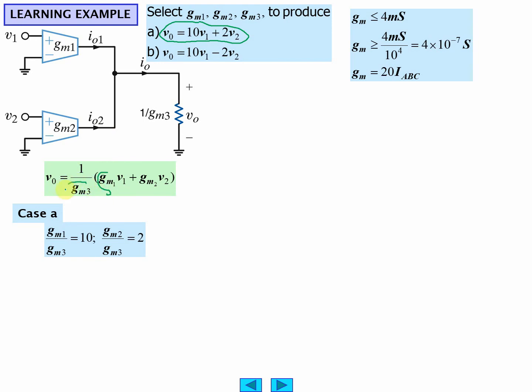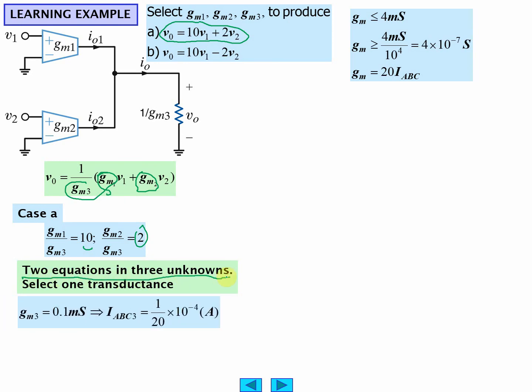GM1 over GM3 equals 10, GM2 over GM3 equals 2. You've got to pick one. Two equations, three unknowns, so it's a design problem. You got to pick one, so a reasonable value, and then you can figure out the current to produce this.